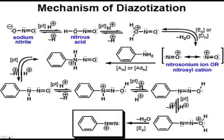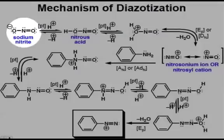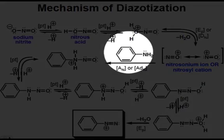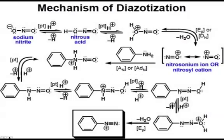Let's take a look at the mechanism of the formation of the diazonium compound. Remember, we have sodium nitrite, an acid source, and aniline as our starting materials for this reaction.